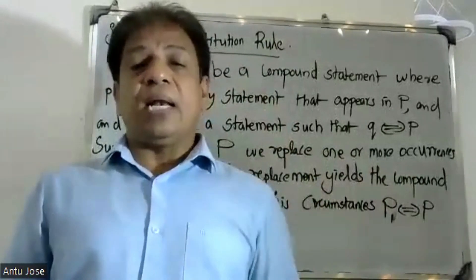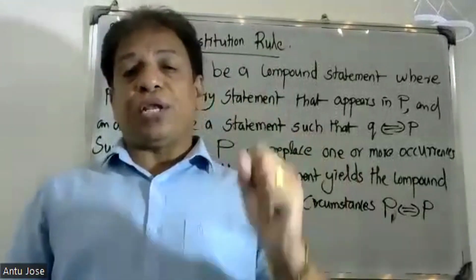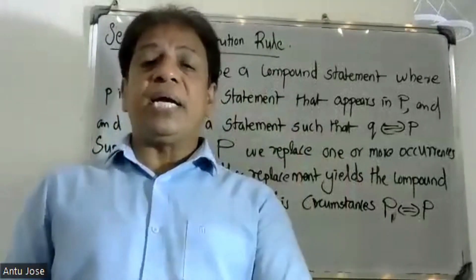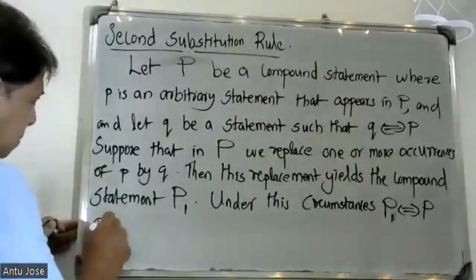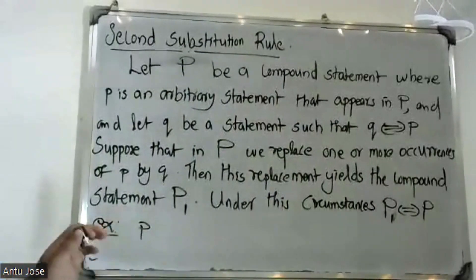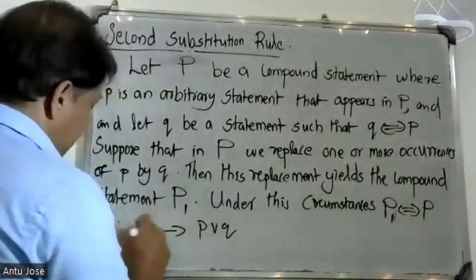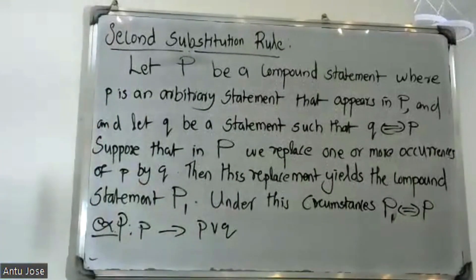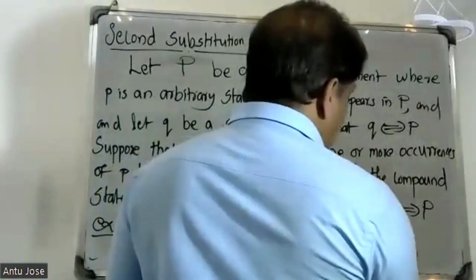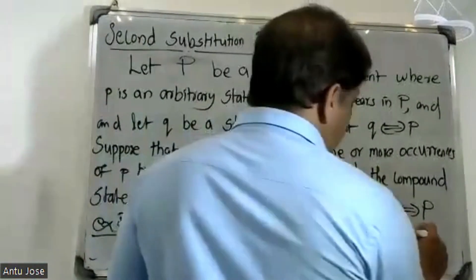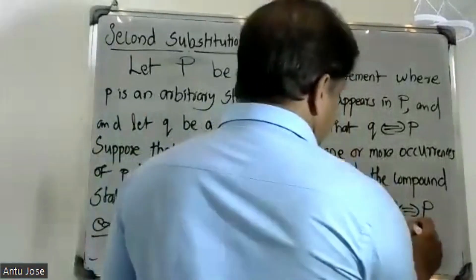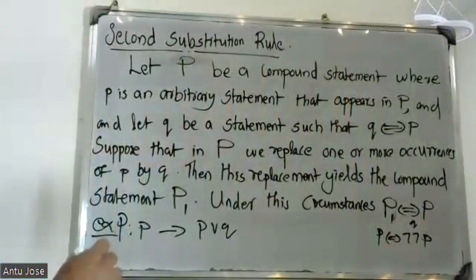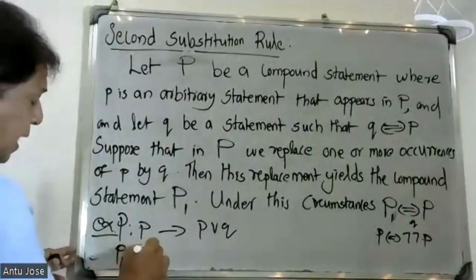When we say P1, the Second Substitution Rule gives P1. We say P1 equals P2. The same thing applies to P1. For example, P equal to negation negation P. So P1 is equal to negation negation P.